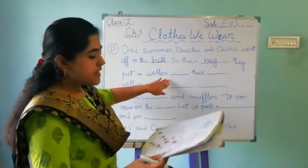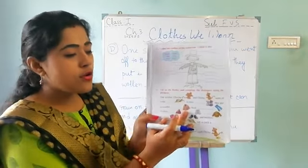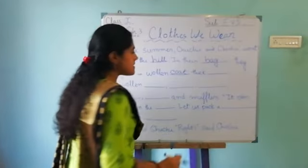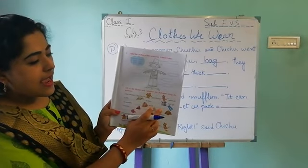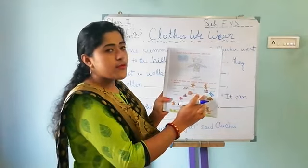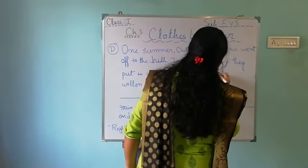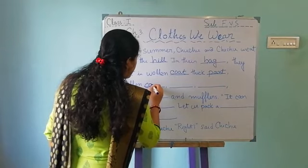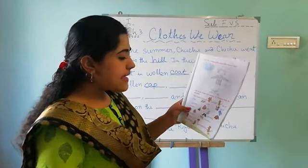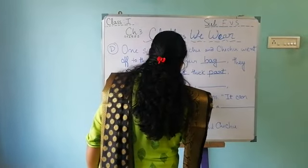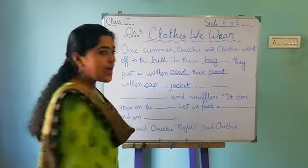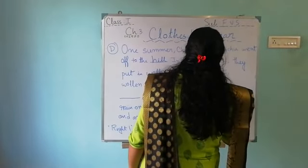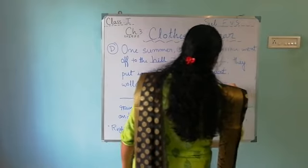Next, they put in a woolen coat. There is a picture of a coat, so you have to write 'coat'. Next, thick — there is a picture, so you have to write here 'thick pants'. After 'thick' you write 'pants'. Next, a woolen cap — there is a picture of a cap. And next is a jacket — after cap there is a picture of a jacket, so you have to write here 'jacket'. Next blank — there is a picture of a sweater, so you have to write here 'sweater' — S-W-E-A-T-E-R.